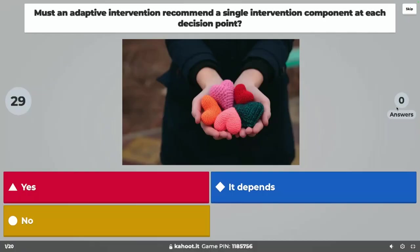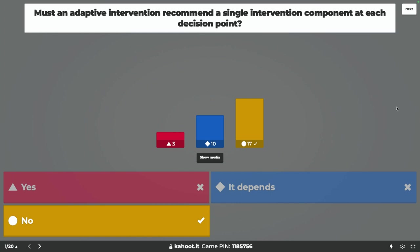First question: must an adaptive intervention recommend a single intervention component at each decision point — yes, no, or it depends? Notice the word 'must.' The answer is no. An adaptive intervention does not have to recommend a single intervention component at each decision point. It can, but in many cases an adaptive intervention recommends a set of components.